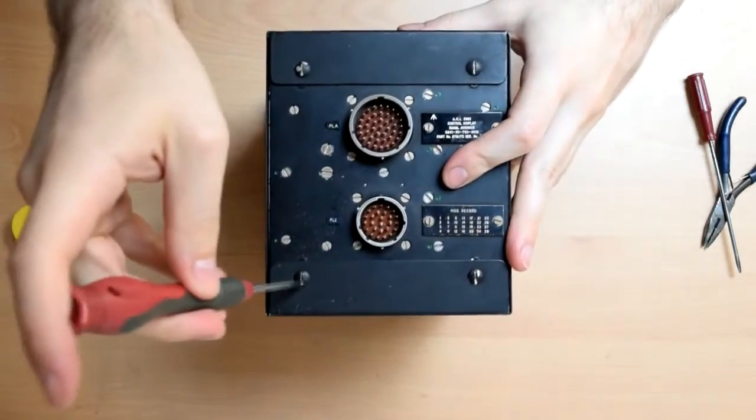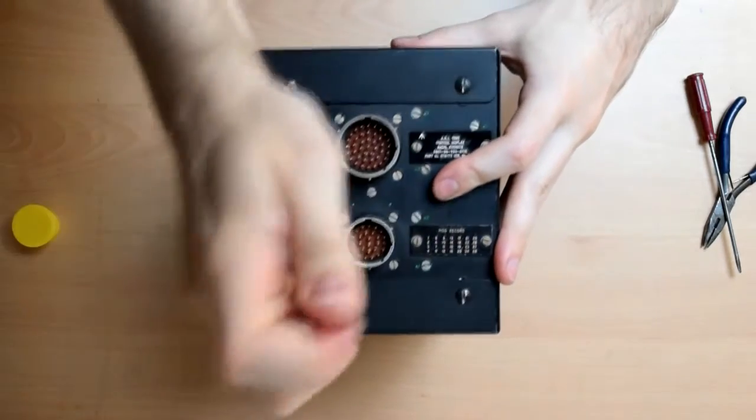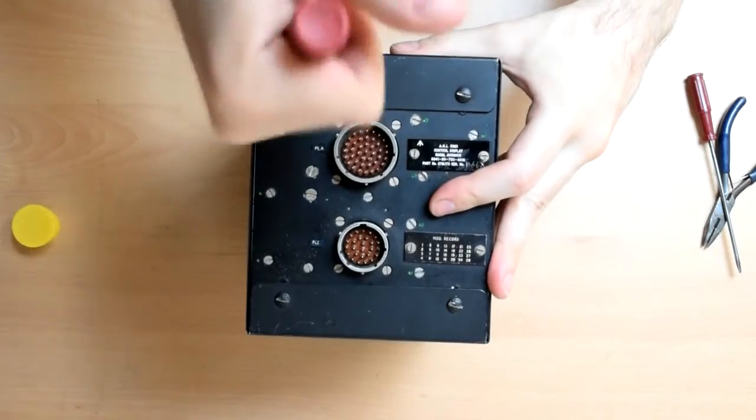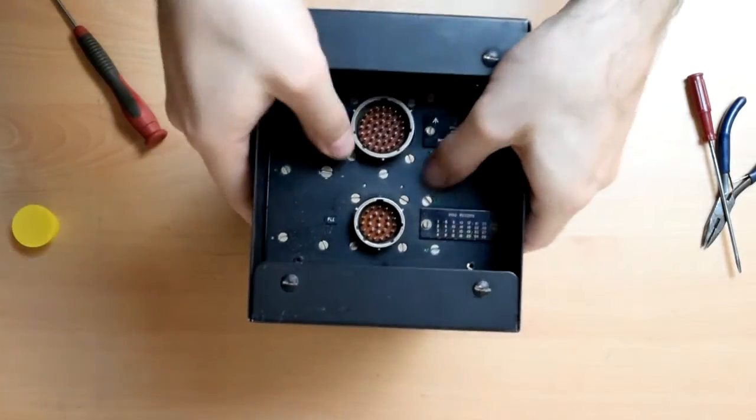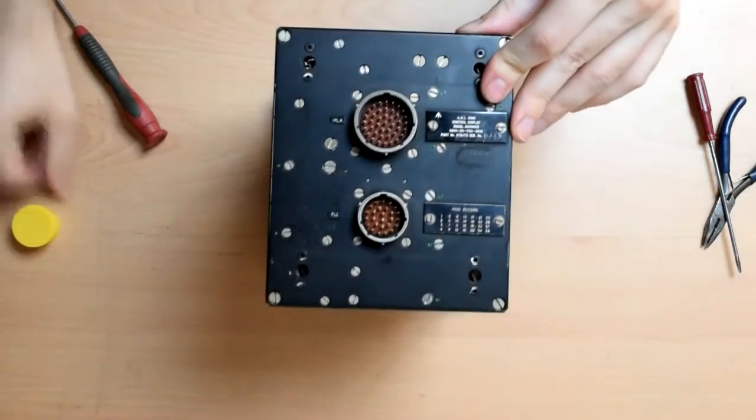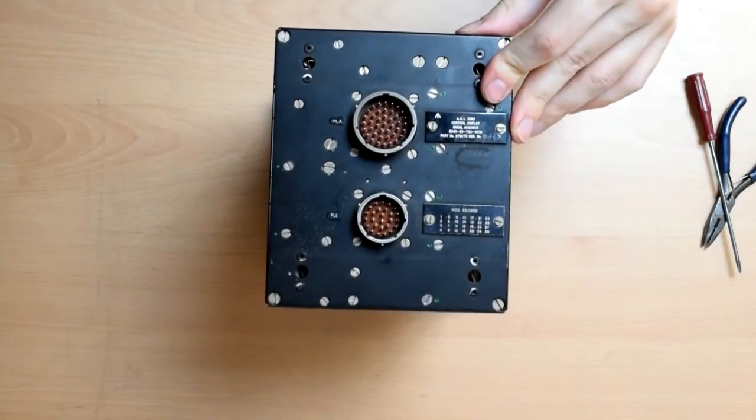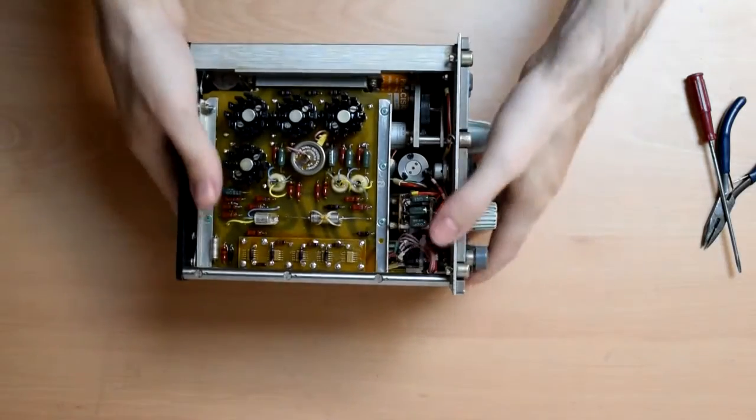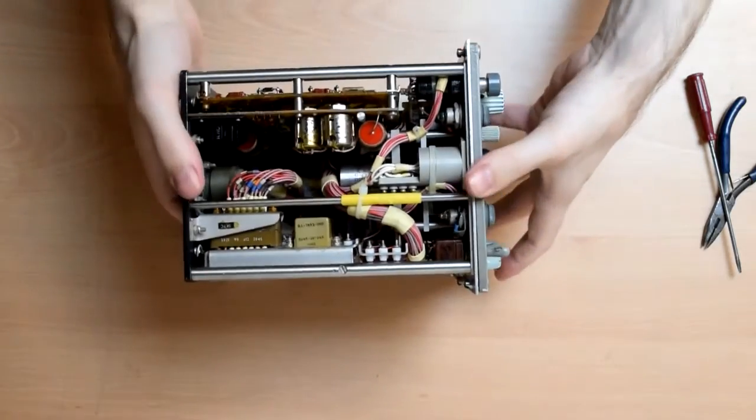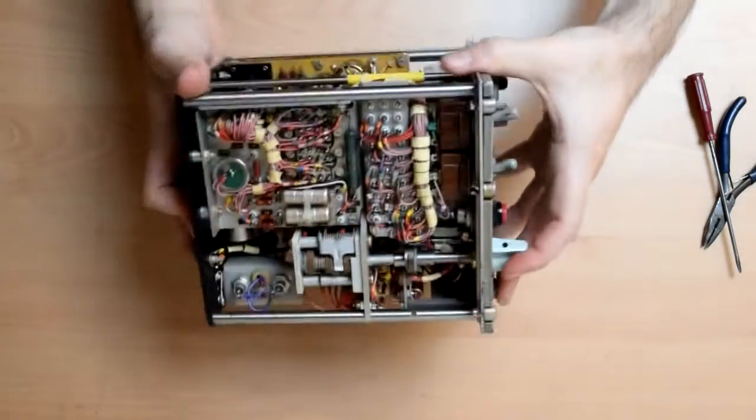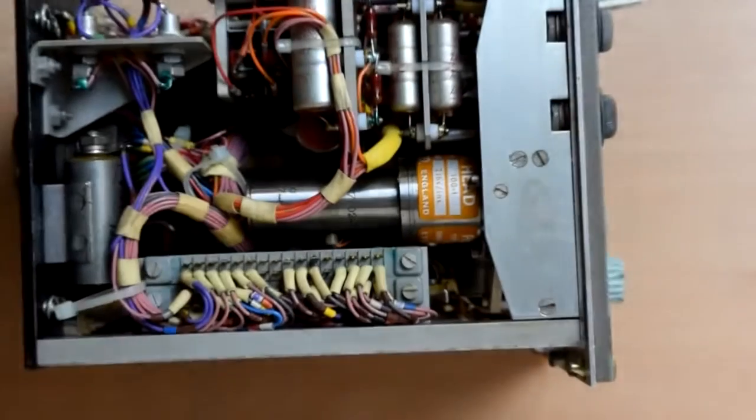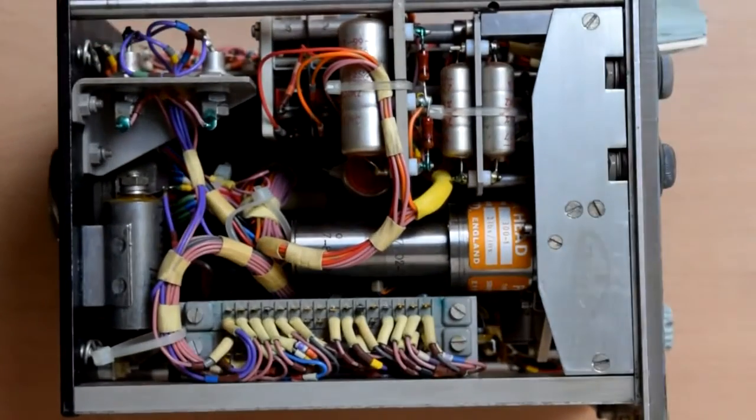The cover comes off with these four little clip screw things. And are you ready for it? Look at all this stuff in here. We've got motors, we've got capacitors, we've got connectors, relays, all sorts of good stuff. So let's zoom in a bit. Focus a bit as well.